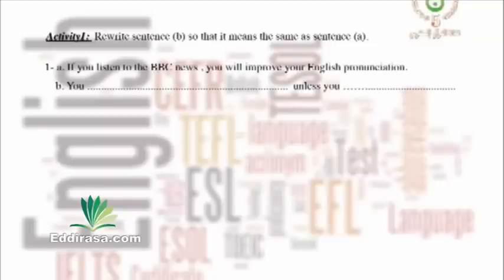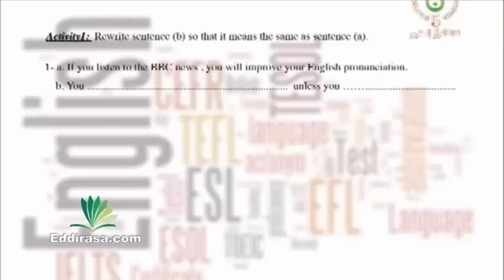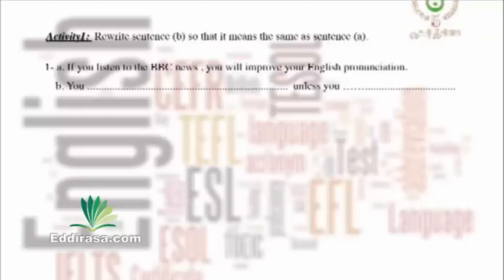Rewrite sentence B so that it means the same as A. First: if you listen to the BBC News, you will improve your English pronunciation. Start sentence B with 'you' and complete using unless — pay attention, because unless appears in the middle of sentence B, not at the start.